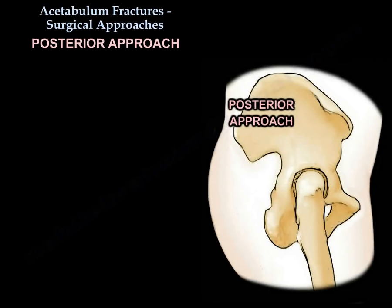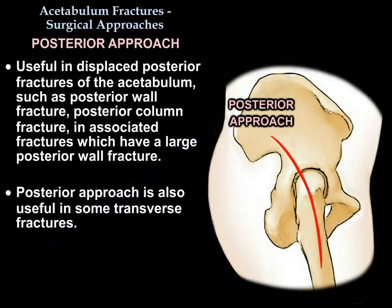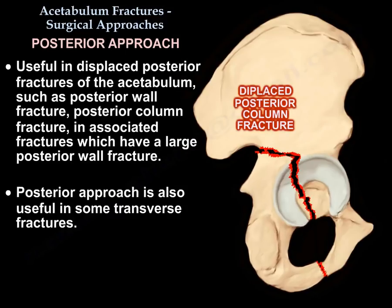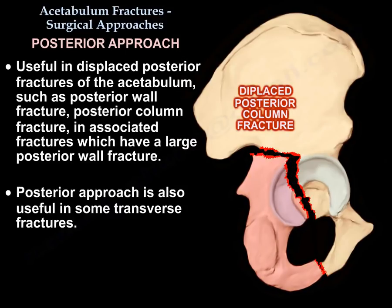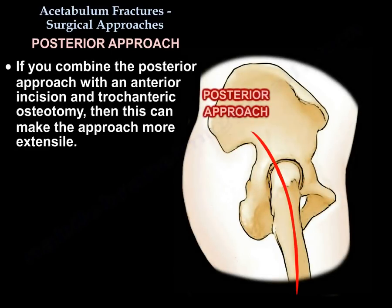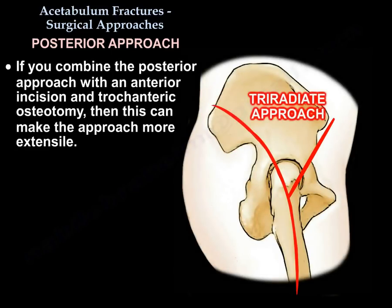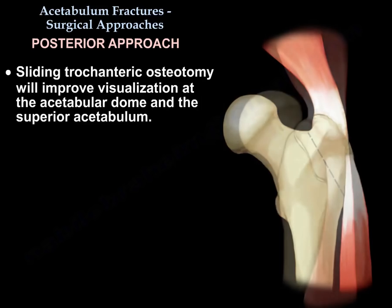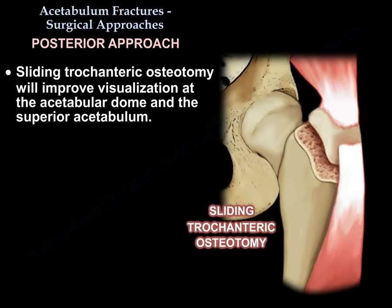The posterior approach is useful in displaced posterior fractures, such as posterior wall and posterior column, in associated fractures that have a large posterior wall, and is also useful in some transverse fractures. If you combine the posterior approach with anterior incisions and with trochanteric osteotomy, then you can make that more extensile. The sliding trochanteric osteotomy improves visualization at the dome and the superior acetabulum.